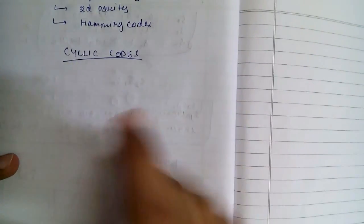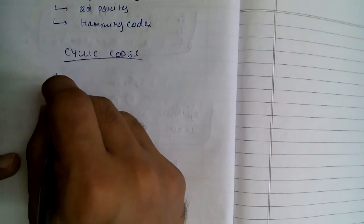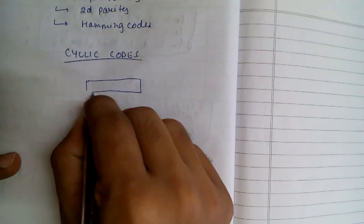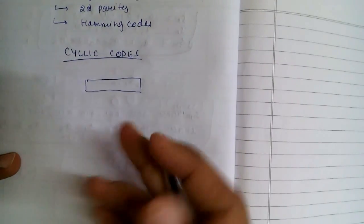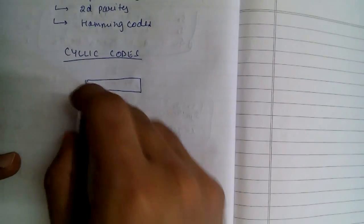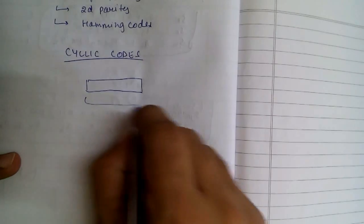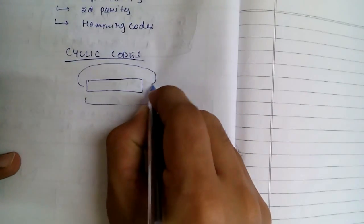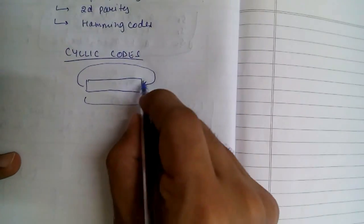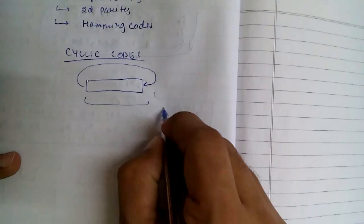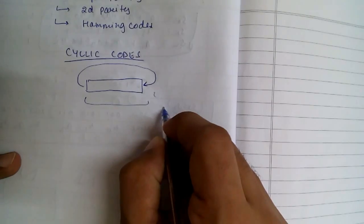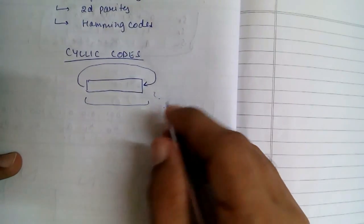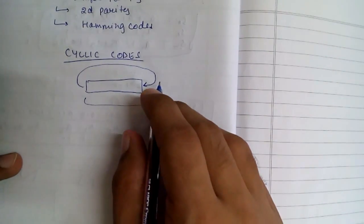Cyclic code is another special linear block code with one special property: if we take a code word and rotate it, the new code word generated will also be another valid code word in the cyclic code table we use.